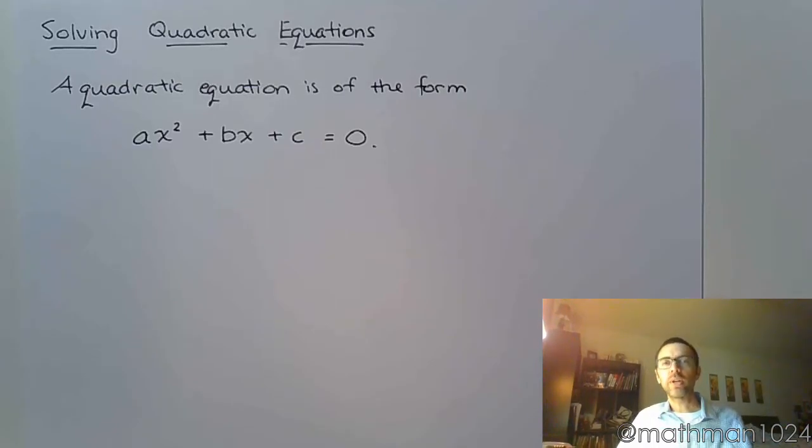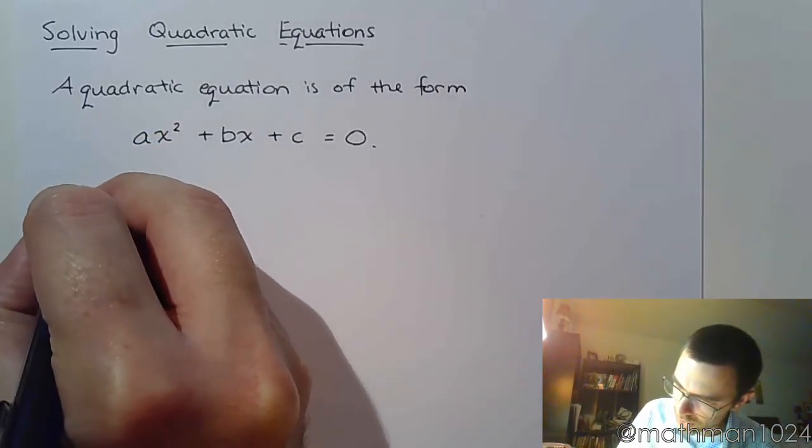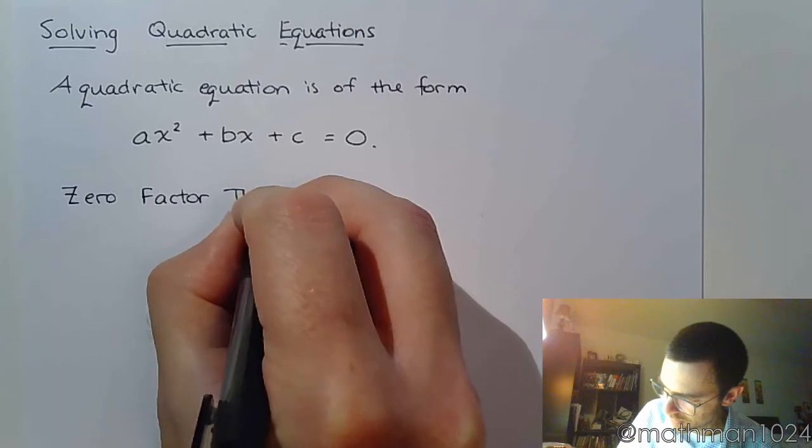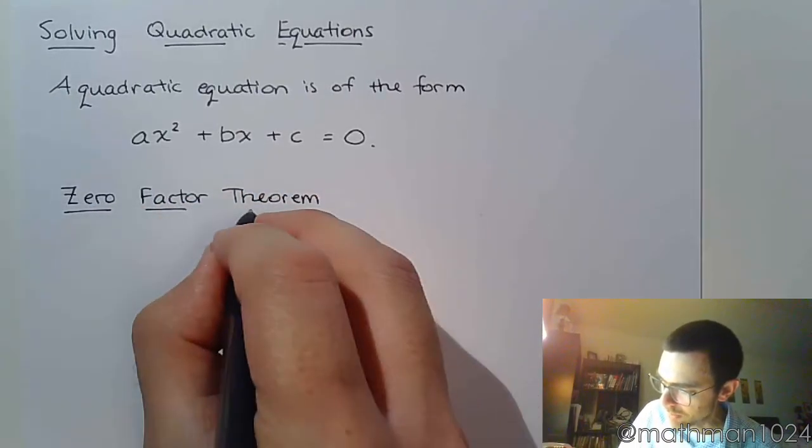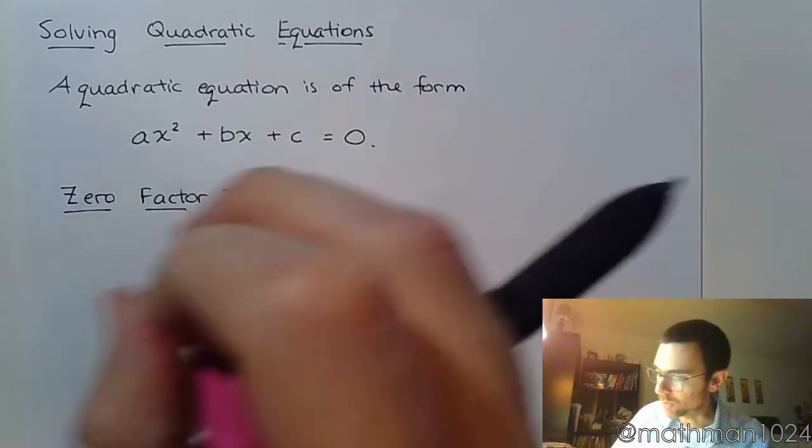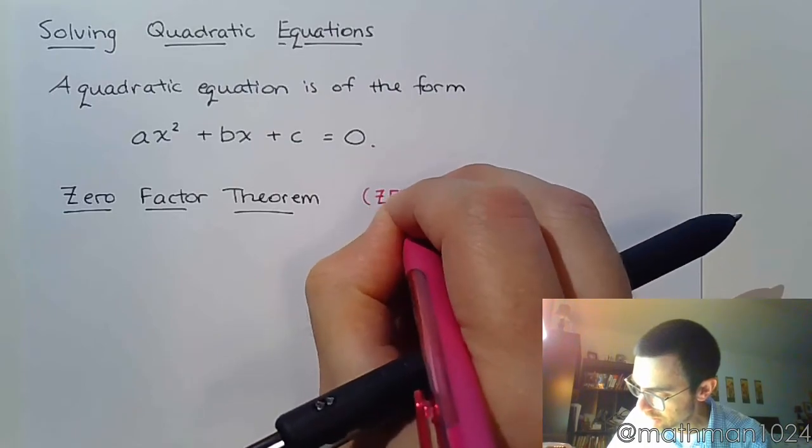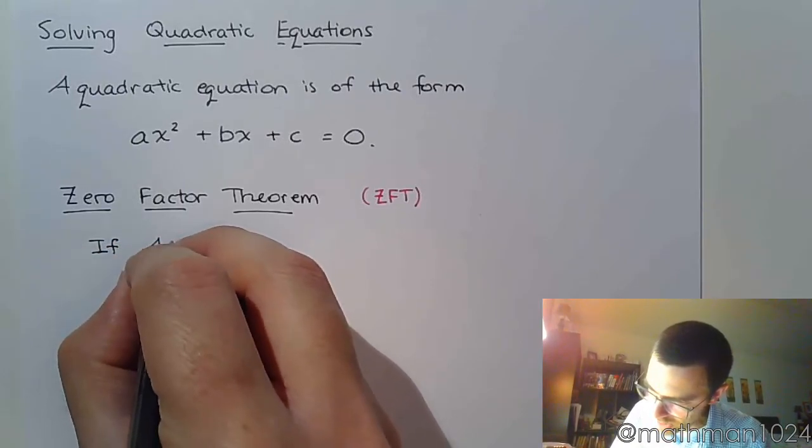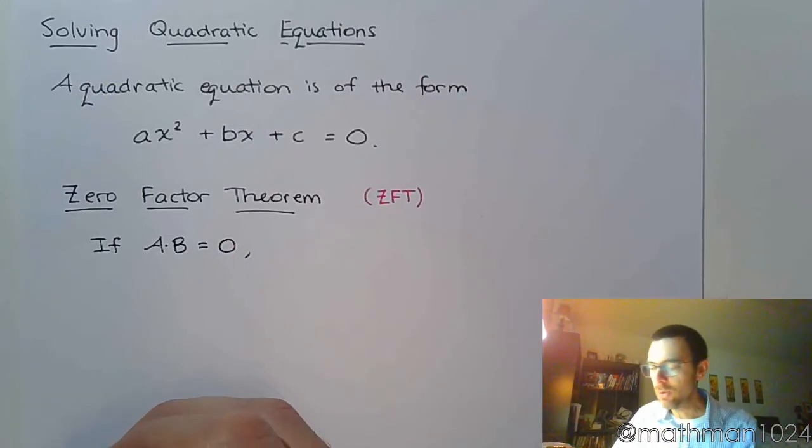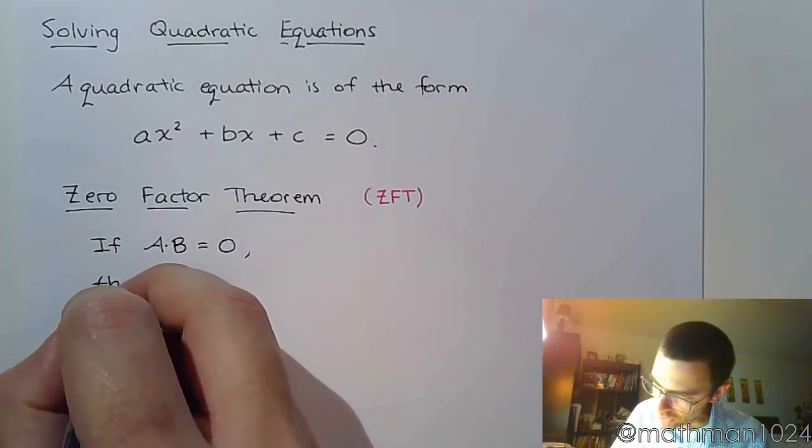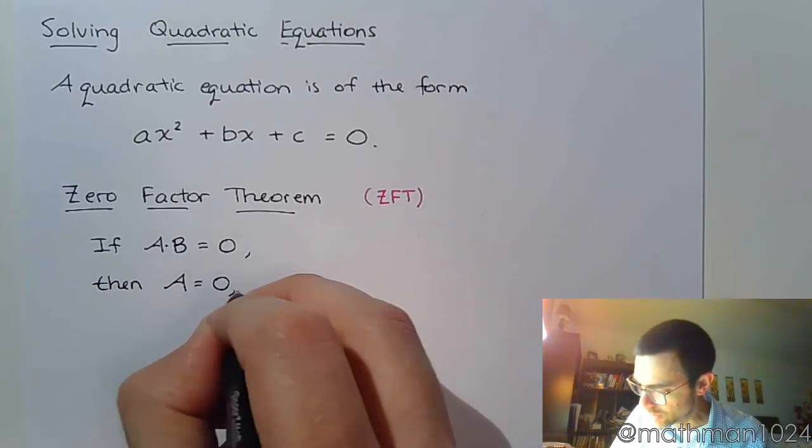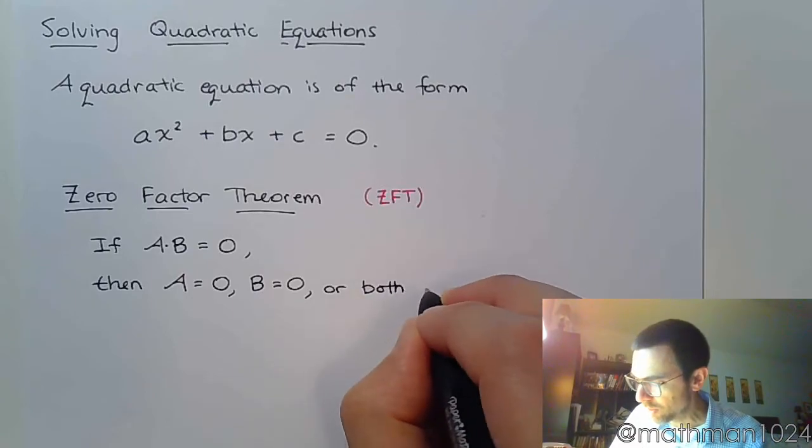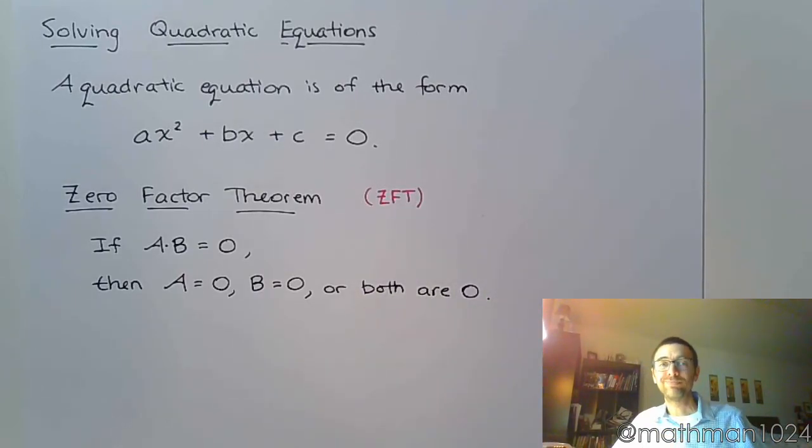So, let's talk about how we solve a quadratic equation. The first thing we see is something called the zero factor theorem. The zero factor theorem—often abbreviated as ZFT—says the following: if you have a product A·B = 0, then A = 0, B = 0, or both are zero. That's what it says.